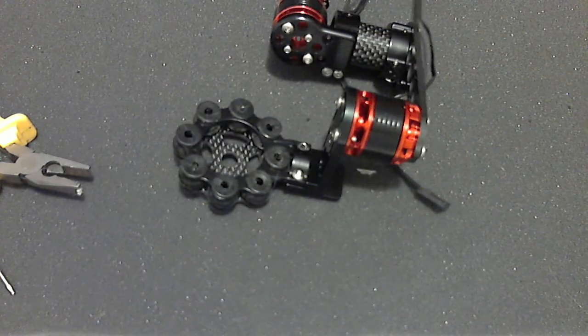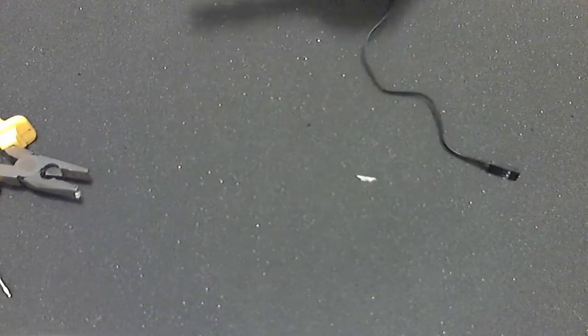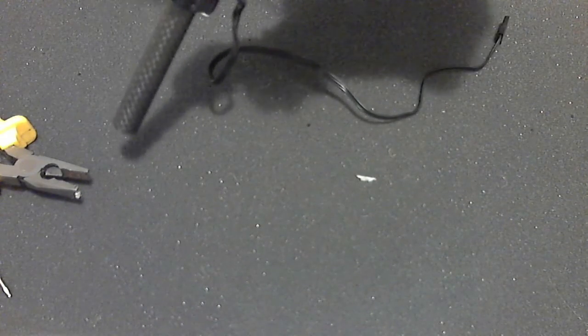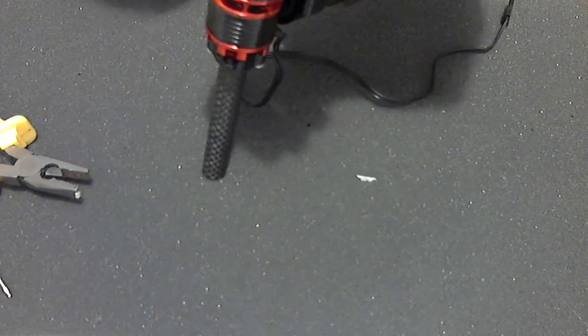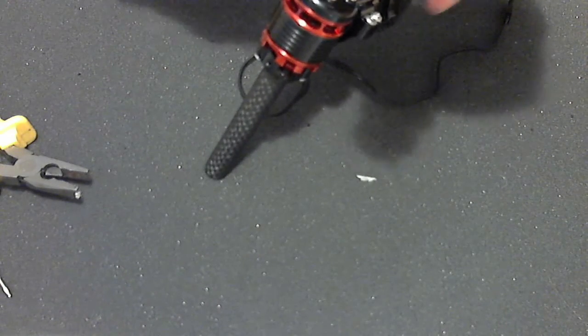So the bolts I have not loctited are those two, these two, and the one at the clamp back here. That's it, they're the only ones I haven't put loctite on. I haven't put loctite on them because I know at some stage I'm going to have to possibly pull them apart later on. Once I've got all the gimbal set up and balanced, I will pull those screws back out and loctite them.